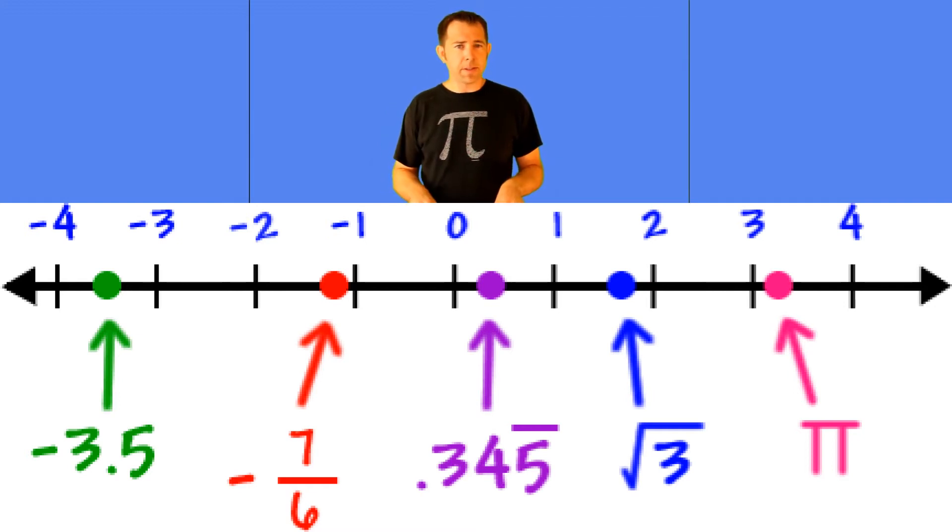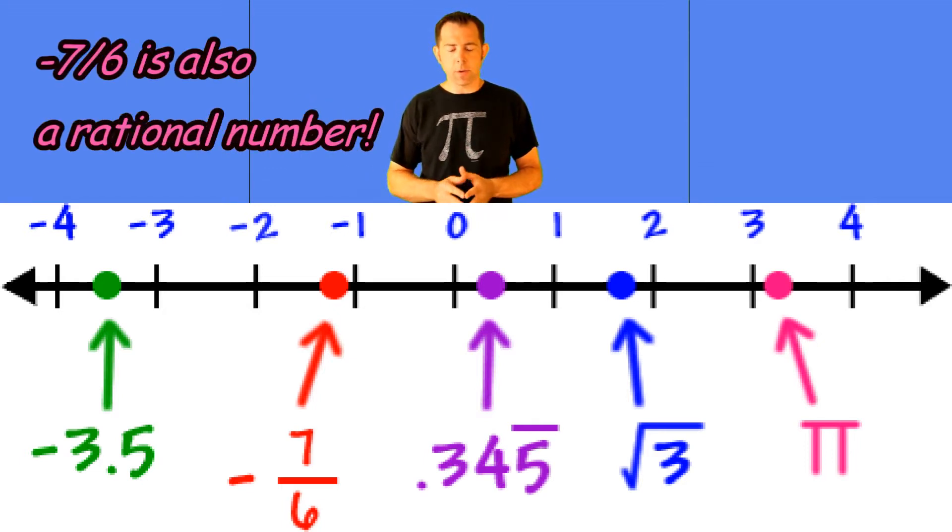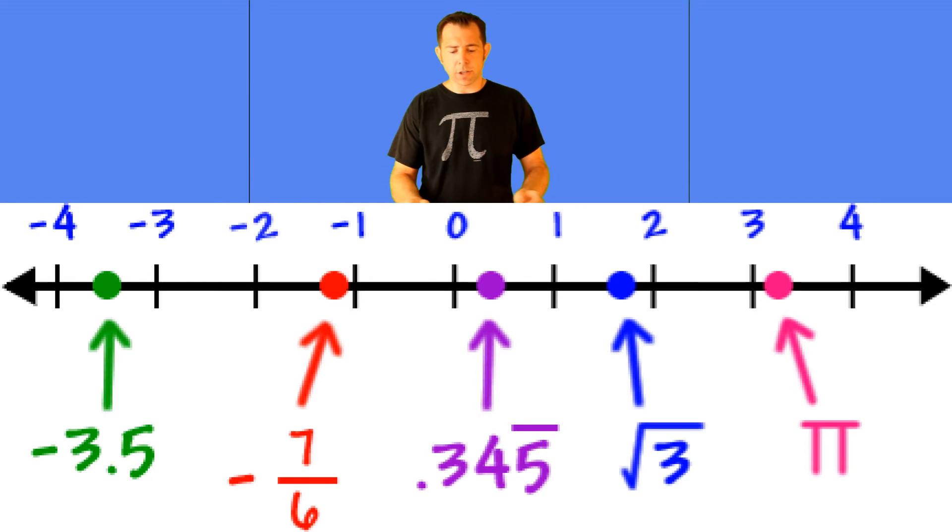Now take any two integers and write them as a fraction, and you've got rational numbers. So this includes 0.345 repeating, or numbers like negative 3.5. So all these numbers that can be written as fractions are rational.